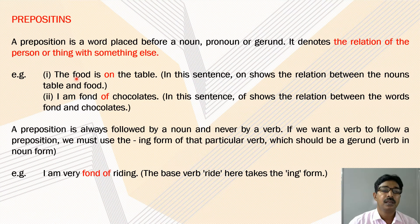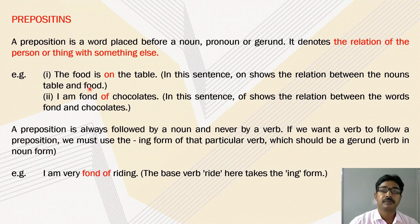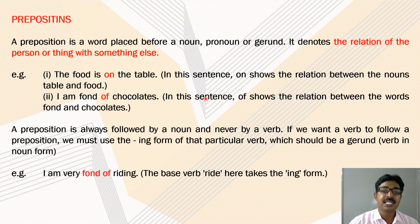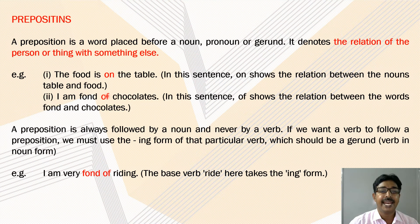Example: the food is on the table. In this sentence, 'on' shows the relation between the food and the table. Second example: I am fond of chocolates. In this sentence, 'of' shows the relation between the words 'fond' and 'chocolates'.